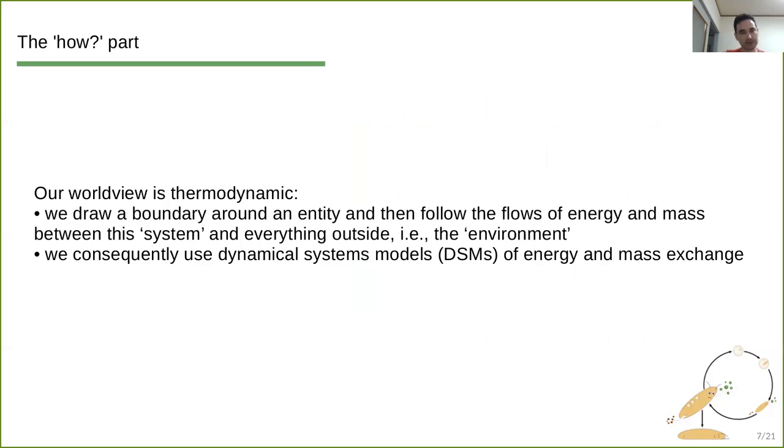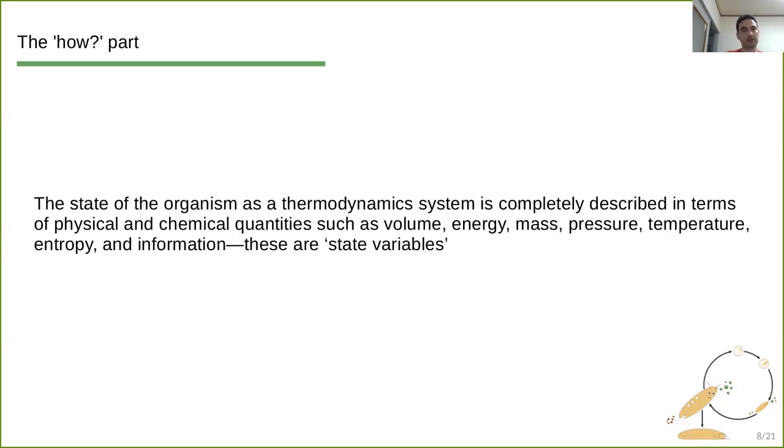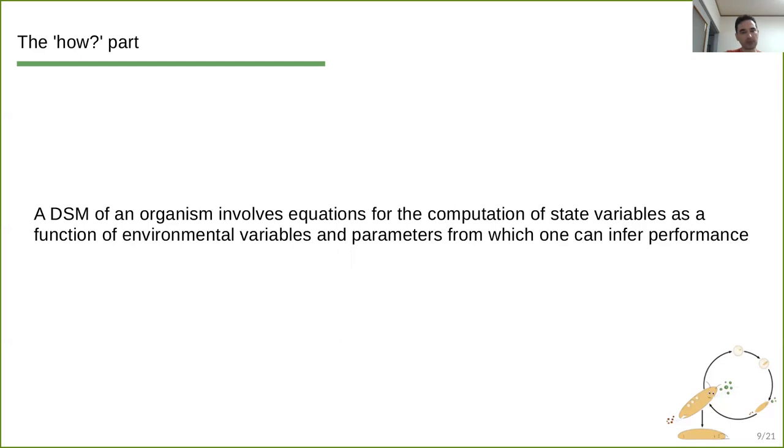Going a little bit more into technical details, our worldview here is thermodynamic. So that means that we draw a boundary around an entity and then follow the flows of energy and mass between this system, which is this bounded entity, and everything that is outside, which is called the environment. And because of this sort of distinction, we use dynamical systems models, DSMs of energy and mass exchange. The state of the organism as a thermodynamic system is completely described in terms of quantities, physical or chemical, such as volume, energy, mass, pressure, temperature, entropy, information. And these things are called state variables. Then the dynamical systems models or DSM of an organism basically involves equations for the computation of state variables as a function of environment, environmental variables and model parameters.